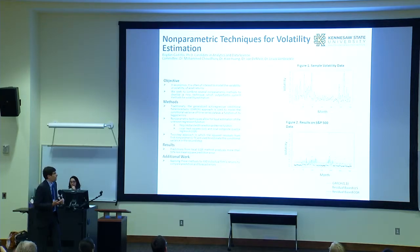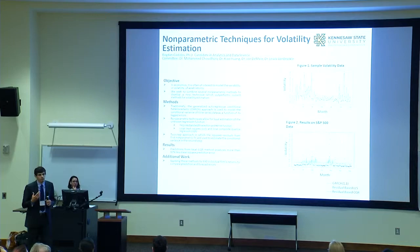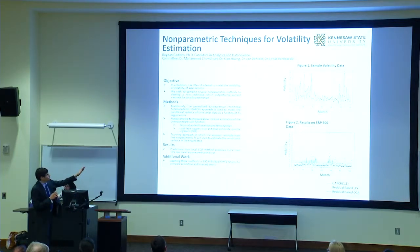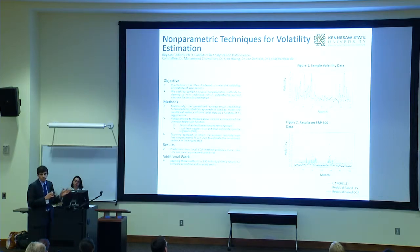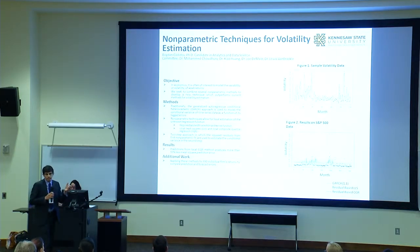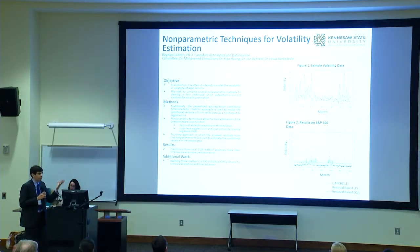Non-parametric techniques allow for local estimation of our unknown regression function. In a parametric model, we have to predefine the framework for estimation, whereas in non-parametric techniques, we estimate our regression function in local periods. For example, in Figure 1, with months on the x-axis, if I'm estimating the value at month 20, I'd choose data around month 20 — maybe between months 18 and 22 or 15 and 25. The width of this interval is dictated by the bandwidth, selected through cross-validation. A kernel function then dictates the weighting, giving higher weight to points closer to the estimation point.